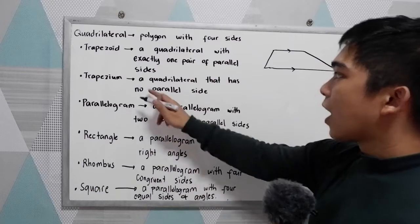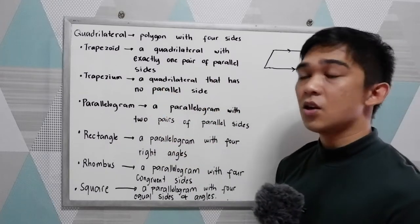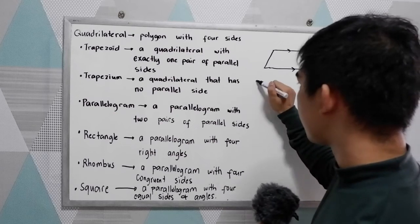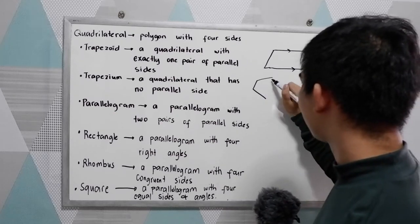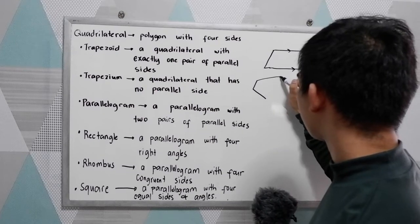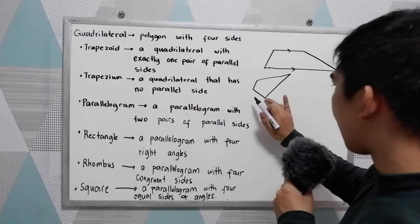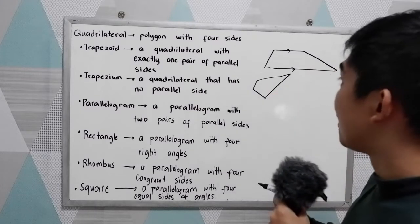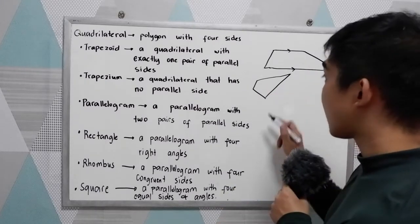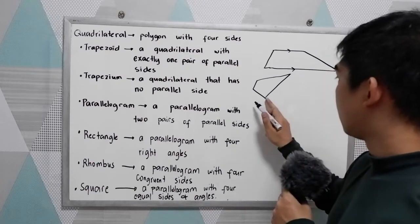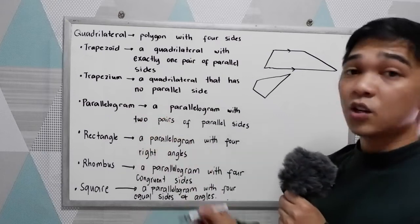Trapezium is a quadrilateral that has no parallel sides. So if we're going to draw a trapezium, it can be like this one. Notice in our diagram or illustration, there is no parallel sign in our trapezium.